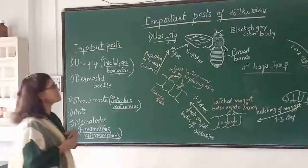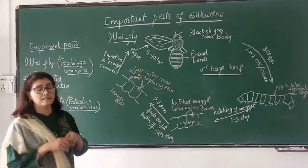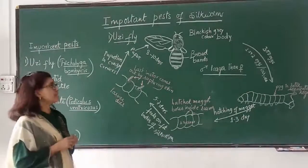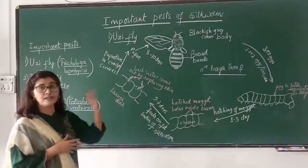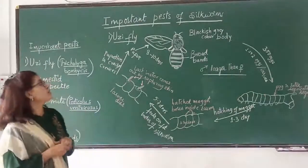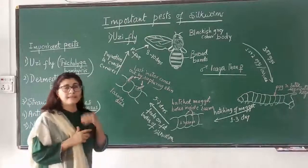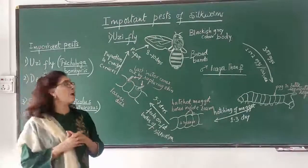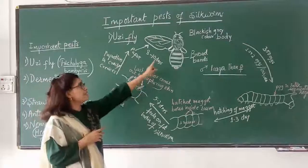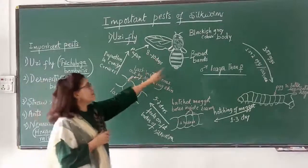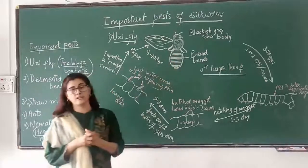The first pest is oozyfly, which is a very important pest of silkworm. The adult oozyfly is a dipteran insect, slightly larger than a housefly. The body is blackish grey in colour, with broad dark bands on the dorsal side of the abdomen.